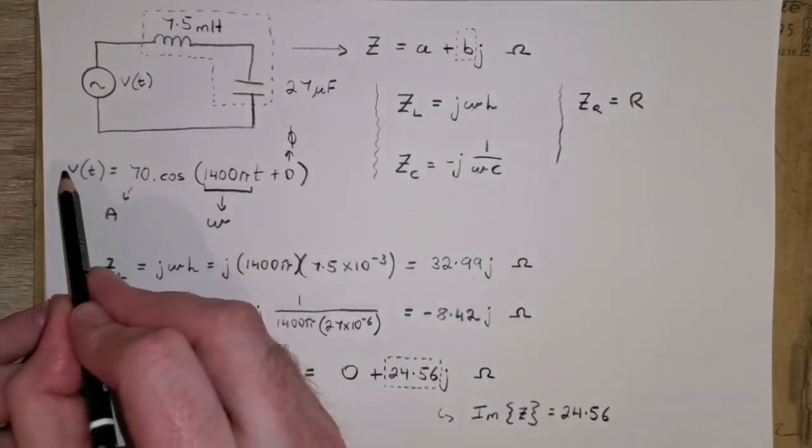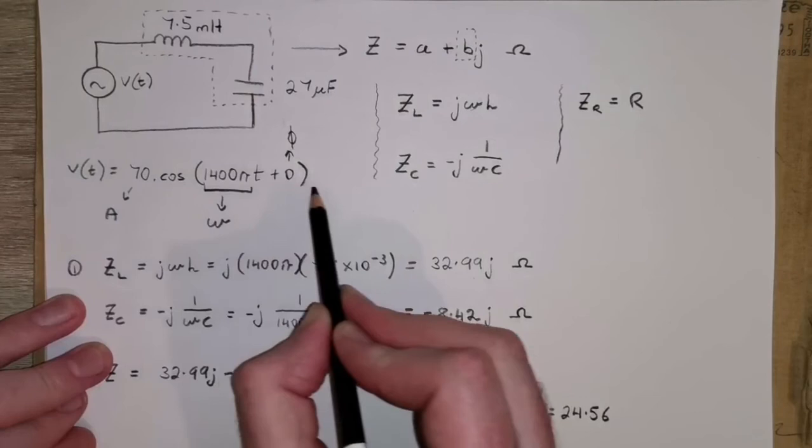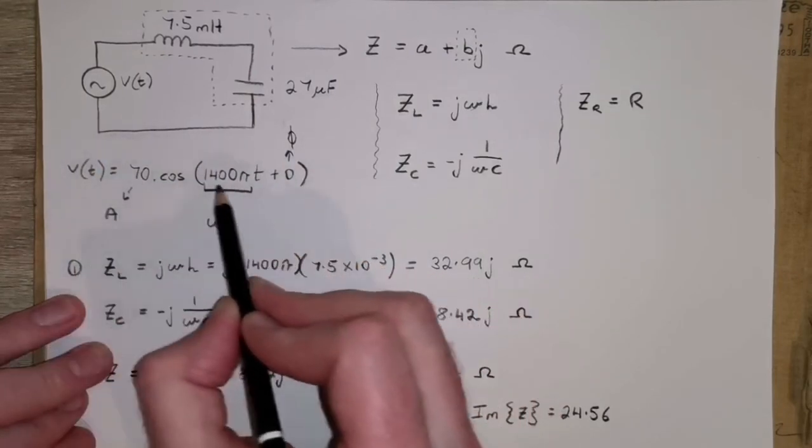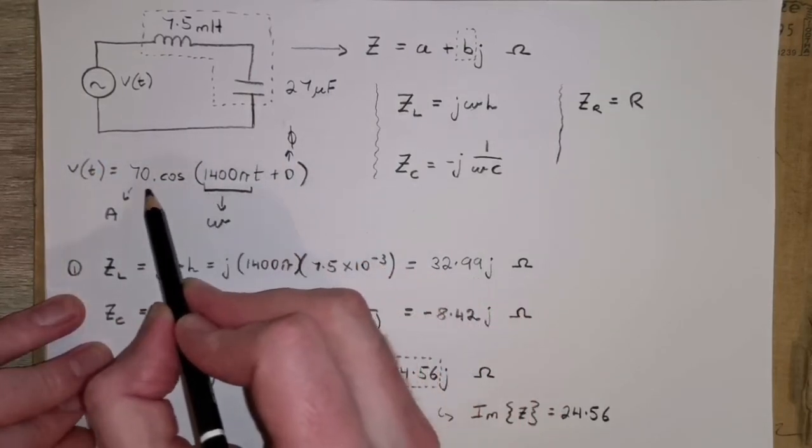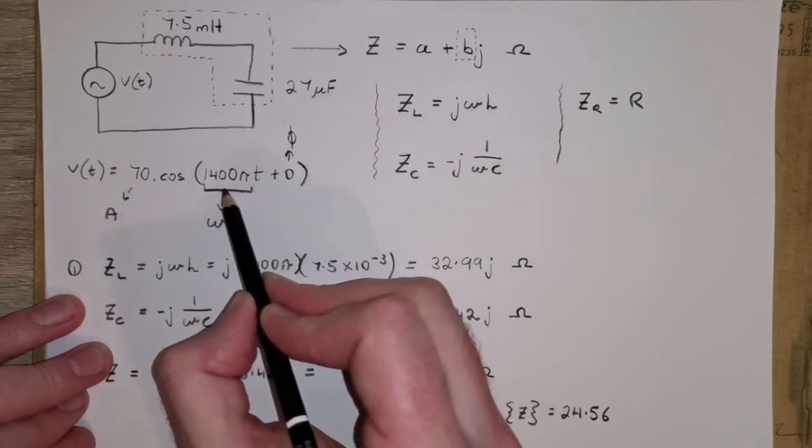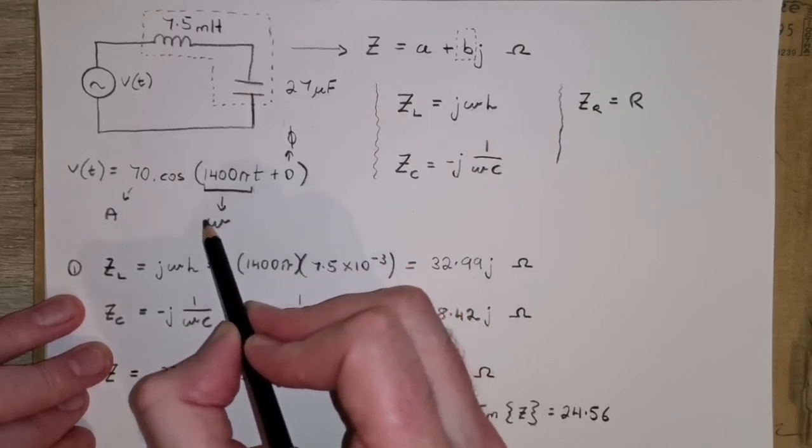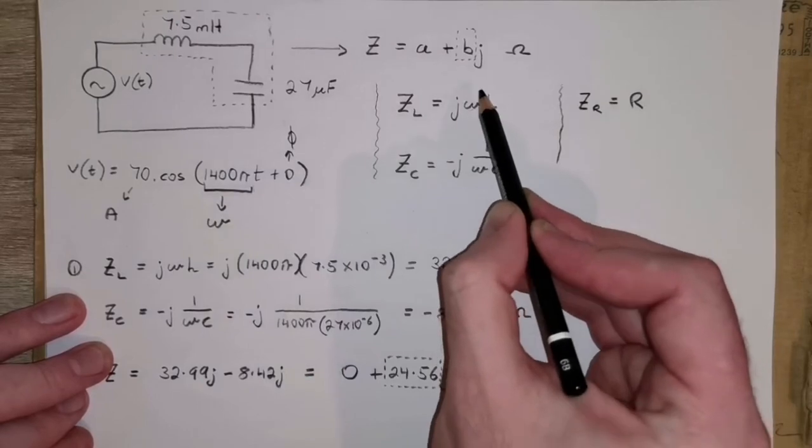And when you're given the expression for the voltage in this form, in terms of sinusoidal parameters, we just have to access the value for the frequency in radians per second here to get it for this equation.